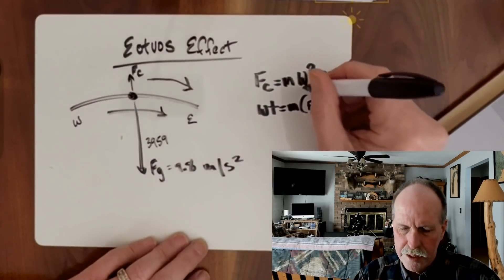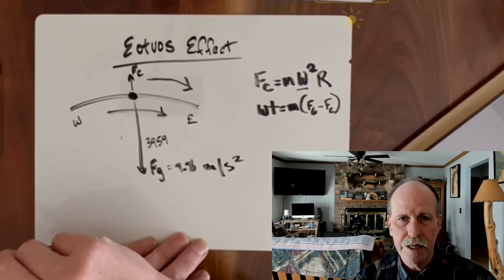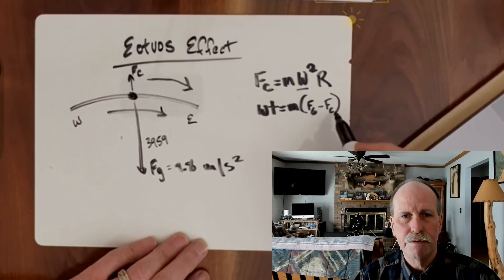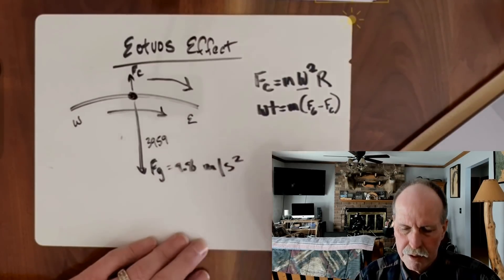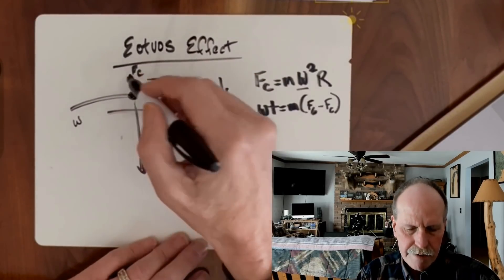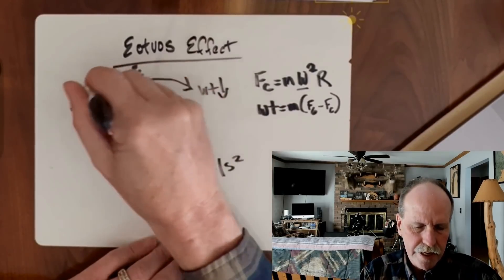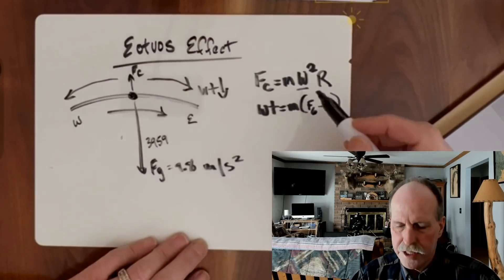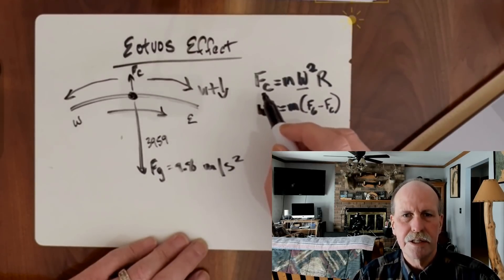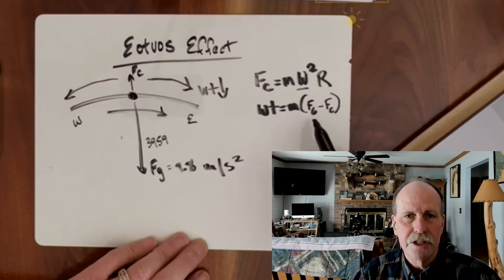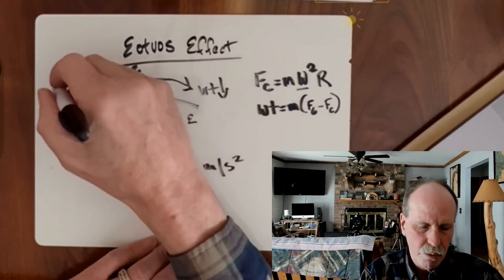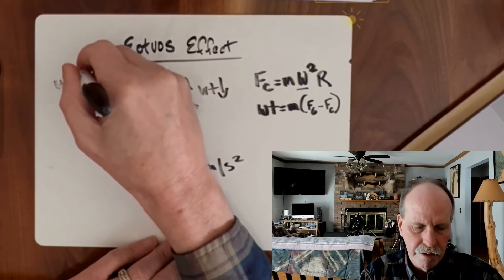You can see right here — increasing the rotational speed. Since weight equals mass times gravity minus centrifugal force, what will happen to your weight? Weight will go down. Likewise, if you travel from east to west, you are decreasing the rotational speed and therefore decreasing the centrifugal force. So you subtract less centrifugal force from gravity times mass, and your weight will increase.